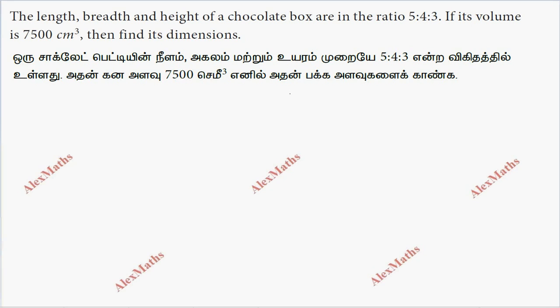Hi students, this is Alex here. The length, breadth, and height of a chocolate box are in the ratio 5 is to 4 is to 3, and the volume is given. We need to find the dimensions.